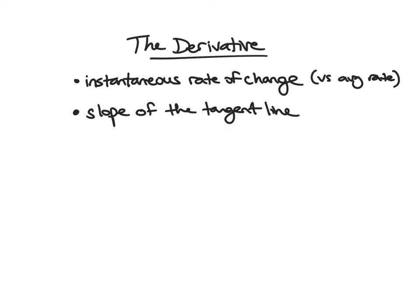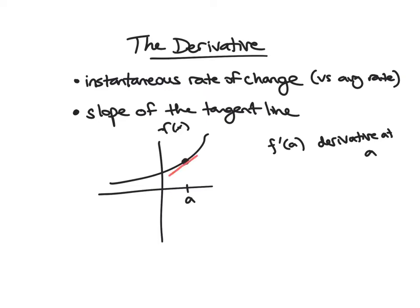Another definition, a more geometric one, is the slope of the tangent line. So if I have a graph like this, and I want to know my derivative, and remember if this is f of x, the notation we would use is f prime of a would be the derivative at a. In this case, I look at the tangent line, the line that just glances on the graph near there. It would be the slope of this line. So f prime of a is the slope of this line.